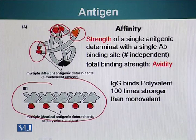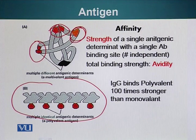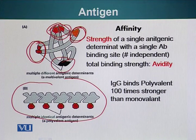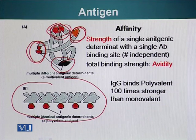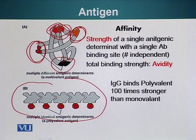Antigens recognized by multiple different antibodies are called multivalent antigens — a single antigen can bind one type of antibody at one site and a different antibody at another site. Affinity is the strength of a single antigenic determinant binding to a single antibody binding site, and it is number independent. The total binding strength of an antigen is called avidity. IgG can bind a polyvalent antigen 100 times stronger than a monovalent one — the binding strength is exponential.